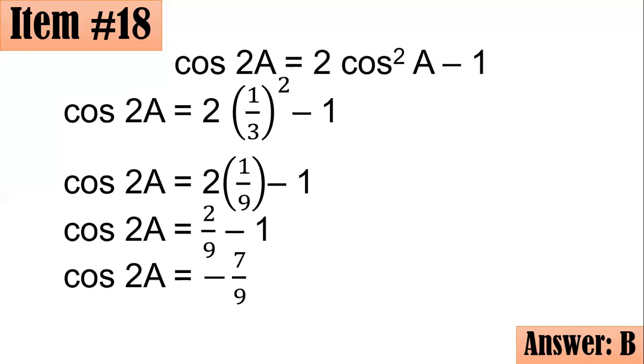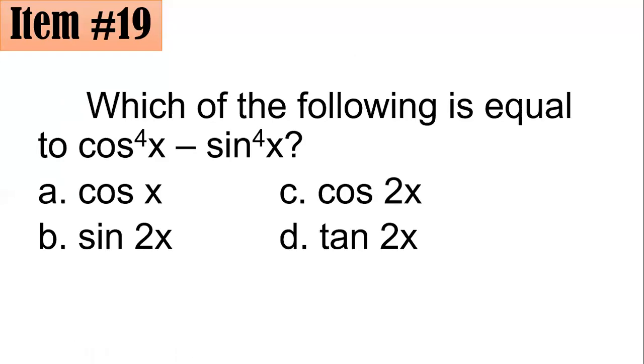Number 19. Which of the following is equal to cosine to the fourth X minus sine to the fourth X? Is it cosine X, sine 2X, cosine 2X, or tangent 2X? If you are keen enough, you could actually see that this is a difference of two squares, right? How come? Because cosine to the fourth X has an even exponent. So cosine to the fourth of X is a perfect square. In a similar manner, sine to the fourth of X is also a perfect square. And the sign between them is minus.